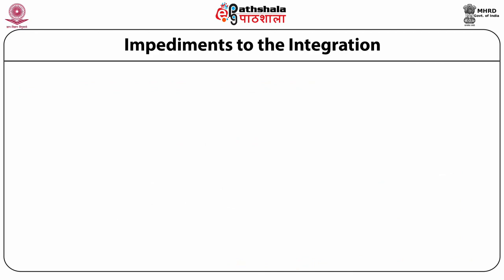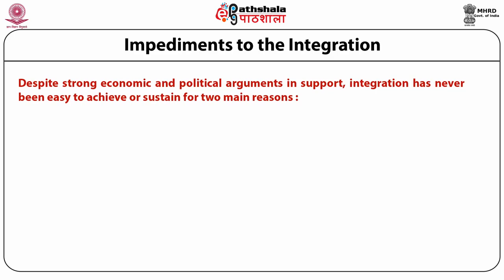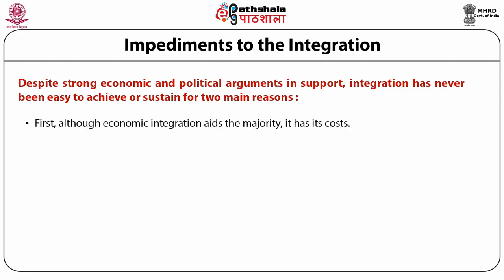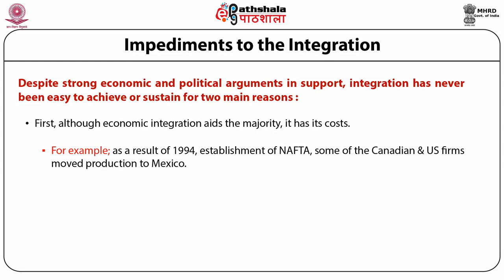Despite strong economic and political arguments in support, integration has never been easy to achieve or sustain for two main reasons. First, although economic integration aids the majority, it has its costs. While a nation as a whole may benefit significantly from an RTA, certain groups may lose. Moving to a free-trade regime involves painful adjustments. For example, as a result of the 1994 establishment of NAFTA, some Canadian and US firms moved production to Mexico, and workers in industries like textiles employing low-skilled labor lost their jobs.